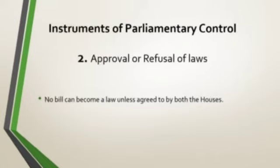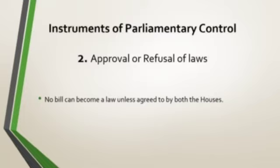The next instrument for controlling the executive is approval or refusal of laws. No bill can become a law unless agreed to by both the Houses. Week after week, the opposition scrutinizes minutely every legislative program for possible weaknesses and then mounts attacks upon them. The opposition knows that the government will always win by making use of its majority in the Lok Sabha, but sharp criticism in Parliament finds wide publicity about the failures of the government. The opposition, by speaking in the House, is in fact talking to the country at large.